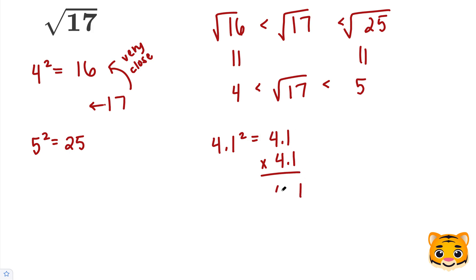1 times 1 is 1, 4 times 1 is 4, add our 0, 4 times 1 is 4, and 4 times 4 is 16. When we add these values together, we get 16.81.